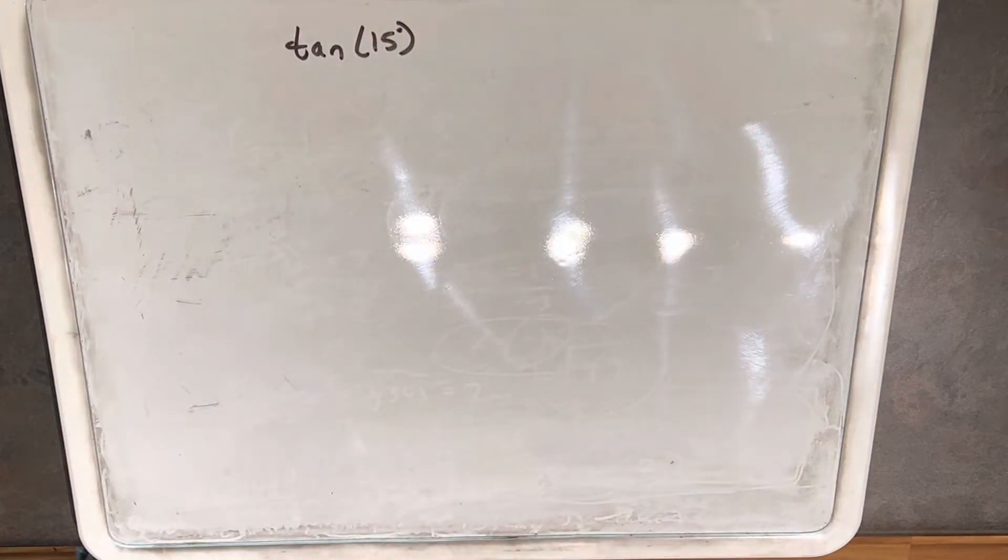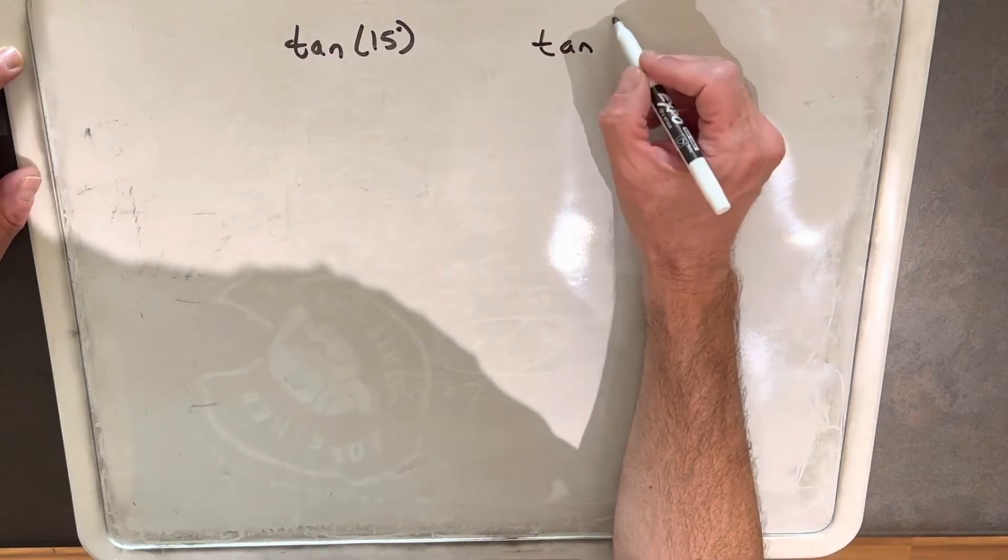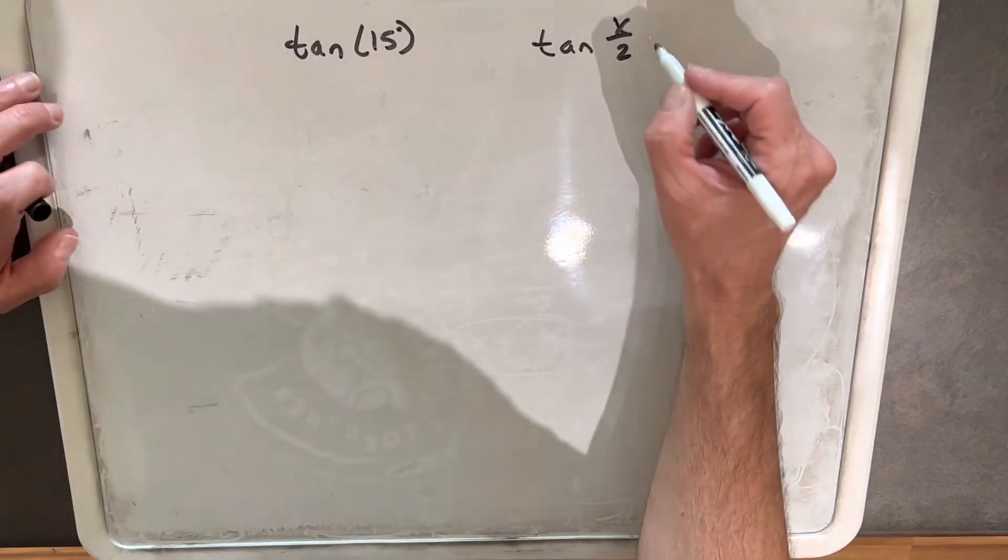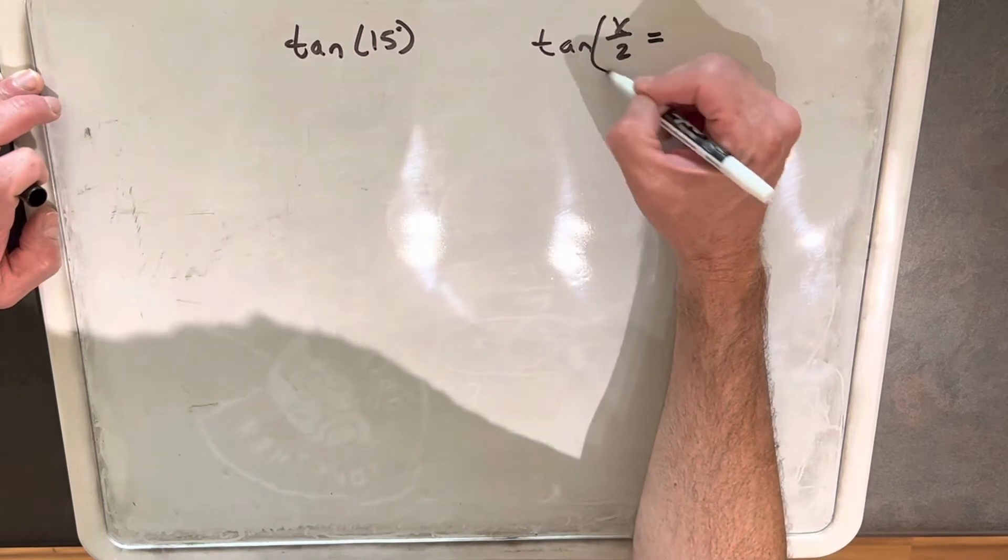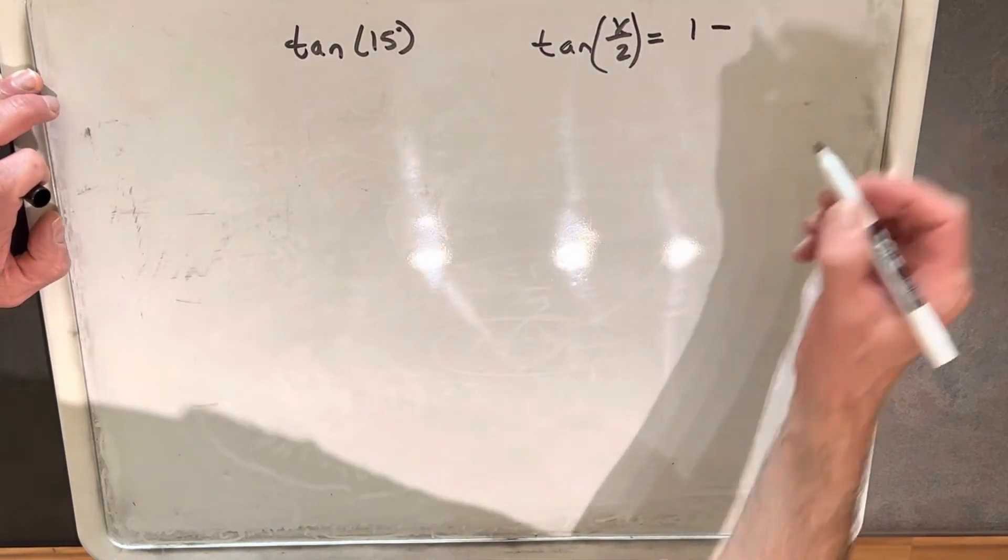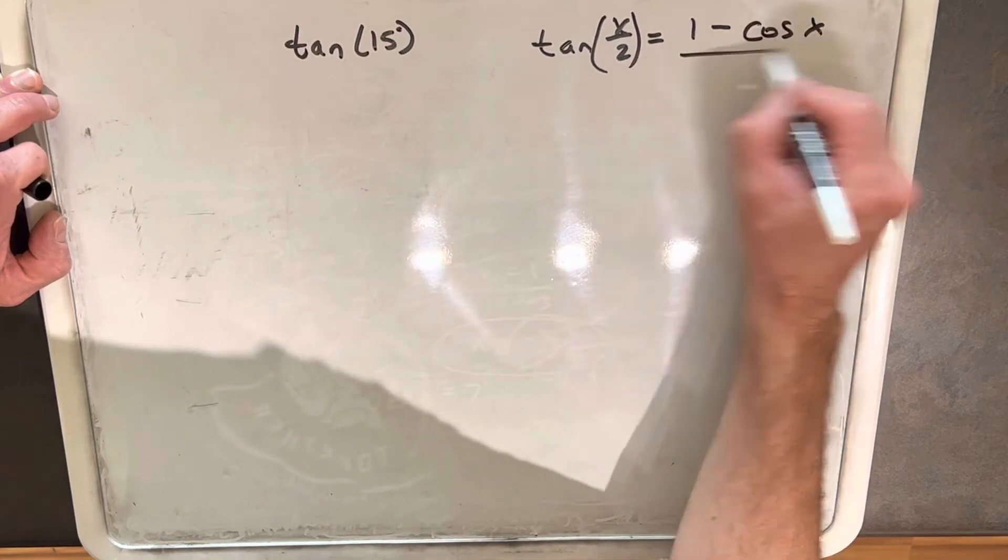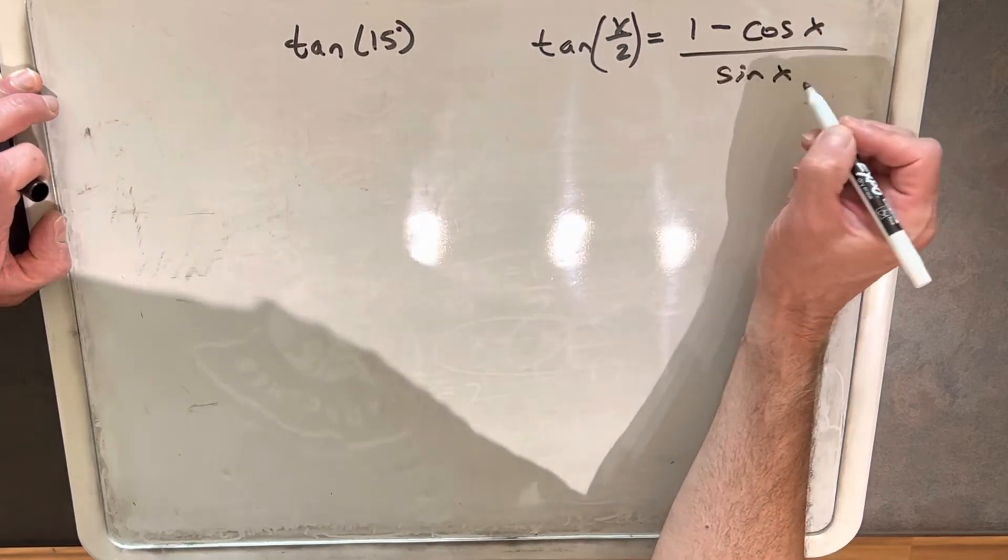What I'm going to do, this is going to be pretty quick, I'm going to use the half angle formula for tangent. Let's just look at that real quick. So the half angle formula, if we know a given x, then it's going to be 1 minus cosine of x over sine of x.